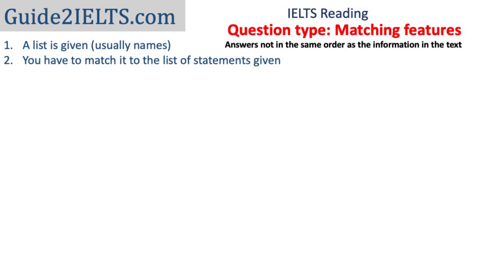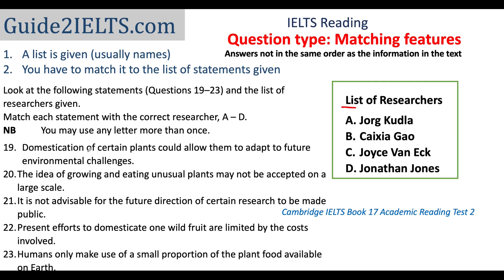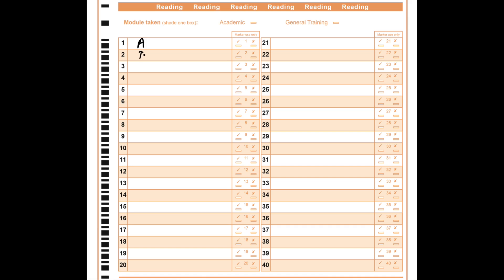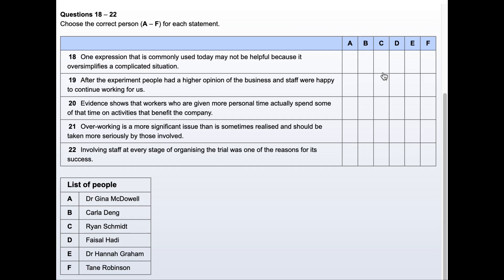Now we move to question types which do not have answers in the same order as the information in the text. This category has two question types. The first is matching features. In matching features questions, you're given a list — usually in a text box — and you have to match it to a set of statements in the questions. This list is usually names but could be places, animals, years, etc. A very important instruction in this question type is 'you may use any letter more than once.' Consciously check whether this is mentioned. In pen and paper IELTS, you write the correct letter; in computer delivered IELTS, you click on the correct option.